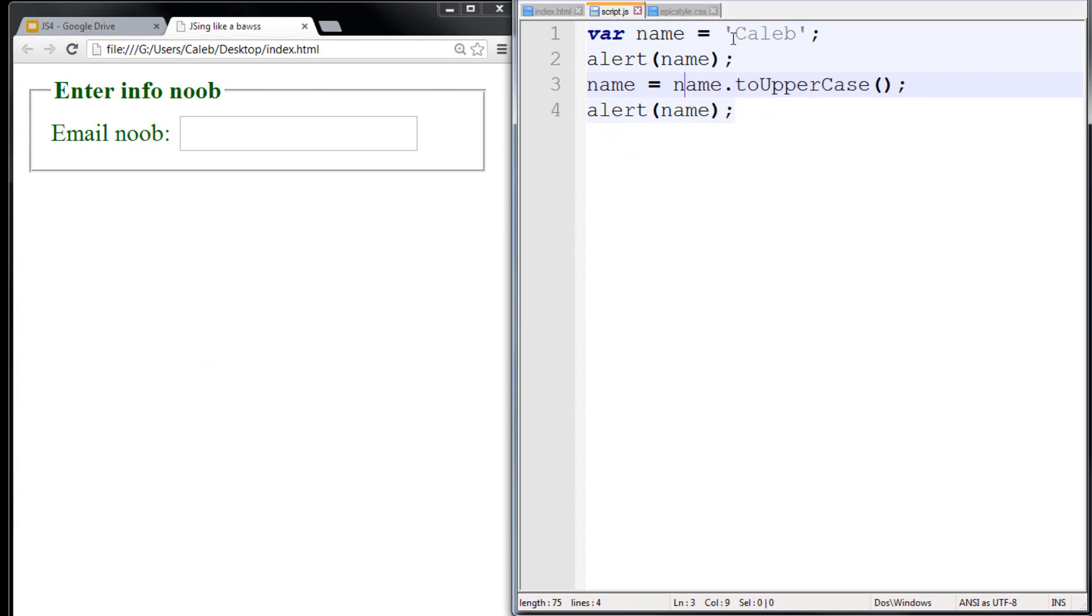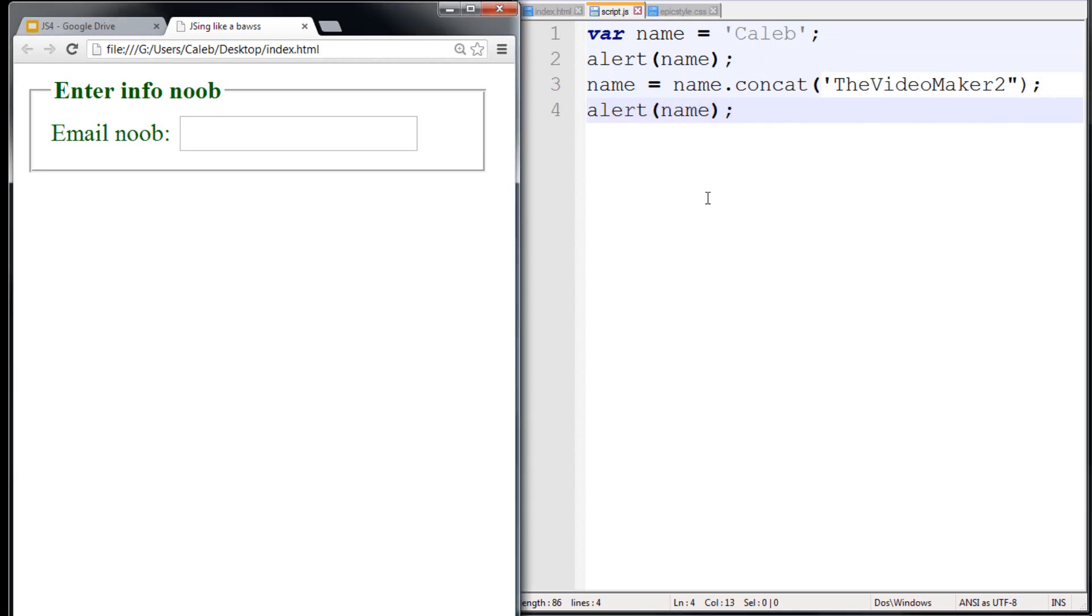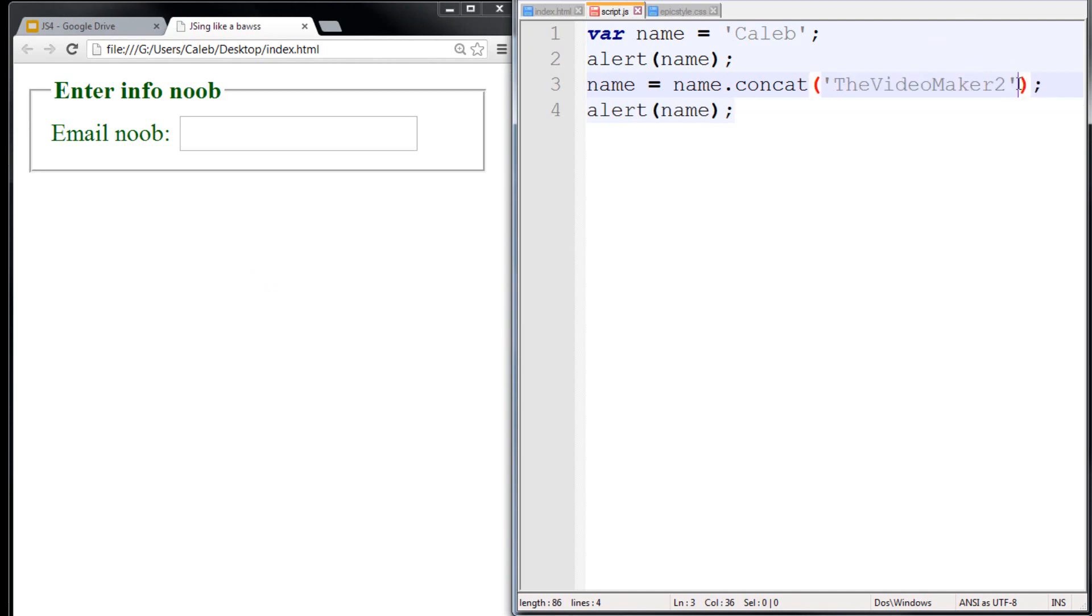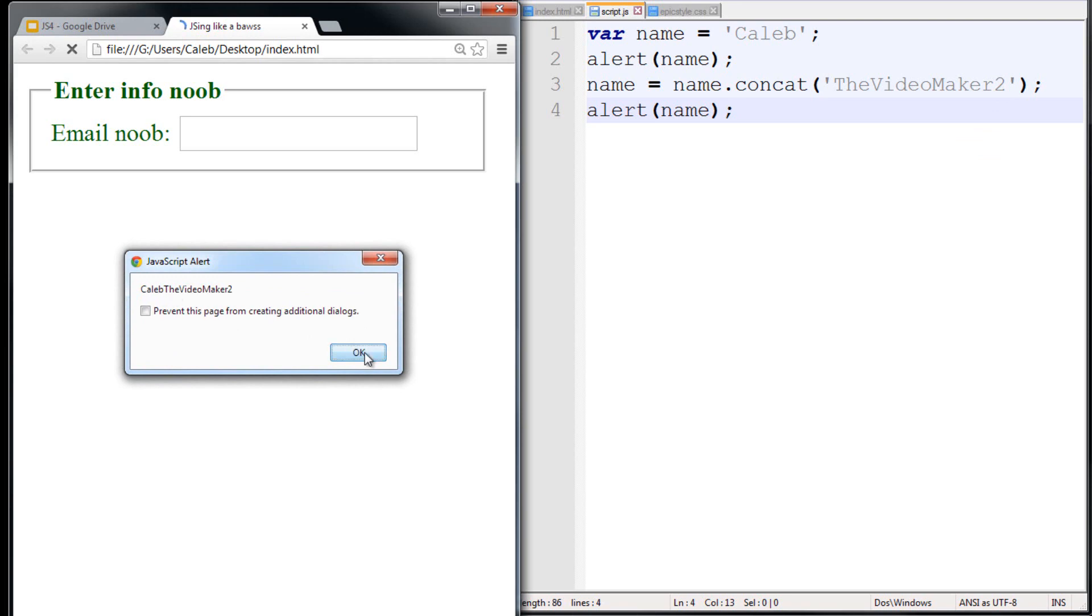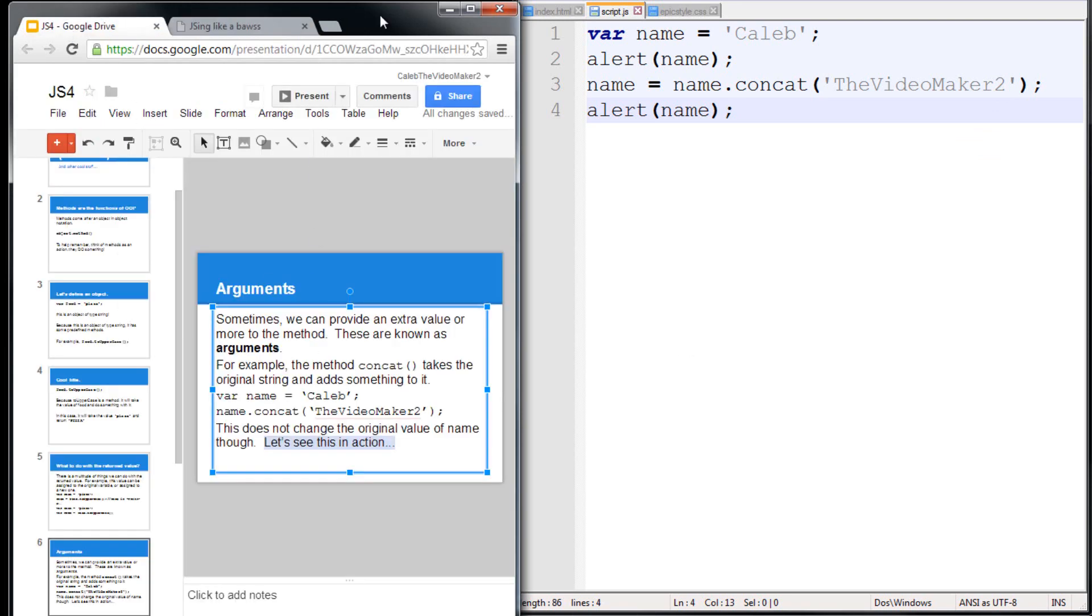Now, let's take a look at the concat method. Within concat, I could say, the first alert is going to give us Caleb with capital C. The second alert should give us Caleb the video maker, too. All right, I messed something up. Obviously, the problem here is I'm using a single quotation mark and closing it with a double quotation mark. This is not going to work in JavaScript because you have to use both of the same kinds. So, I fixed that and then refresh. First one's correct. Second one is correct.